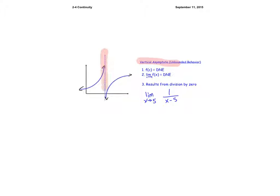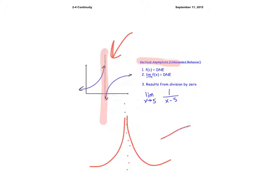Vertical asymptote discontinuity happens when you have a vertical asymptote. Usually the left and right hand sides will not be equal. Rarely, a vertical asymptote produces a case where the left and right agree, but then you still wouldn't have a value at C. So that case would violate two rules, not three.